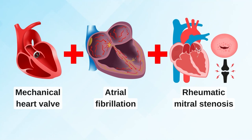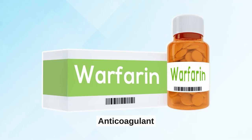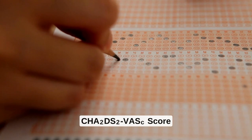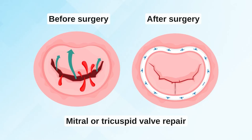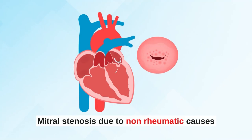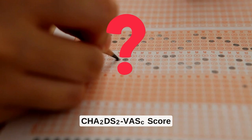For the first two patient types — mechanical heart valve with or without atrial fibrillation, and severe rheumatic mitral stenosis — we give warfarin regardless of a score called the CHA₂DS₂-VASc score. The CHA₂DS₂-VASc score should be used when dealing with the last three patient types: bioprosthetic valves, valve repairs, and mitral stenosis due to non-rheumatic causes. Let's look at what this CHA₂DS₂-VASc score is all about.